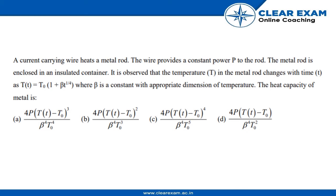The temperature T is equal to T₀(1 + βt)⁴, where β is a constant with appropriate dimension of temperature. We have to find the heat capacity of the metal.